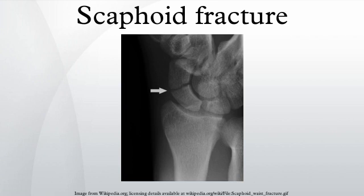Complications: Avascular necrosis (AVN) is a common complication of a scaphoid fracture. Risk of AVN depends on the location of the fracture. Fractures in the proximal one-third have a high incidence of AVN; waist fractures in the middle one-third are the most frequent fracture site and have moderate risk of AVN. Fractures in the distal one-third are rarely complicated by AVN.